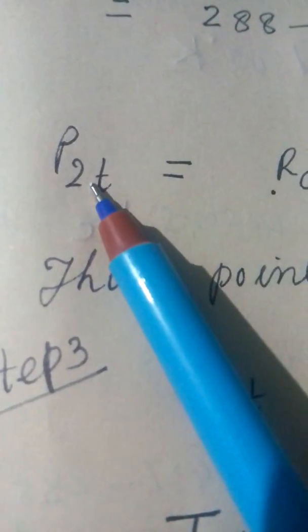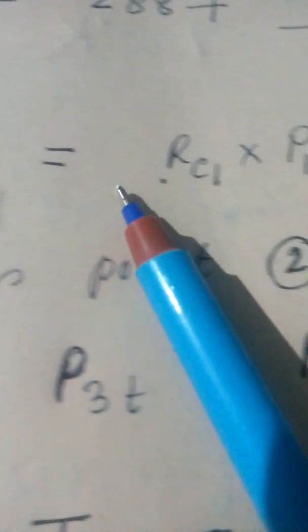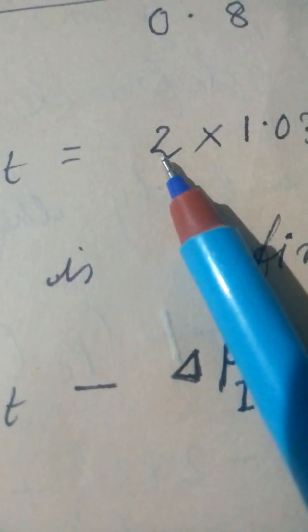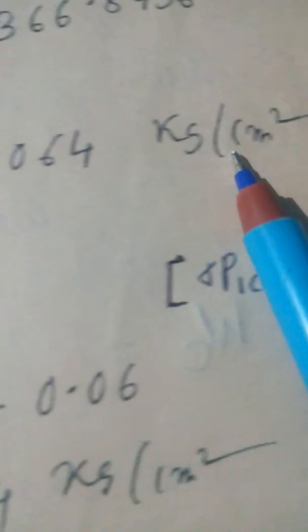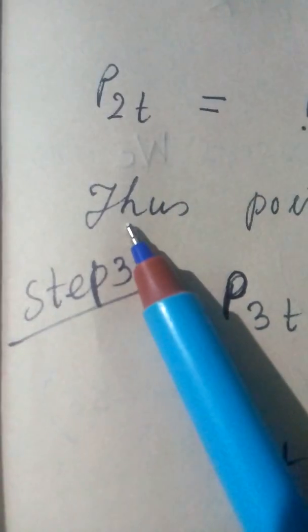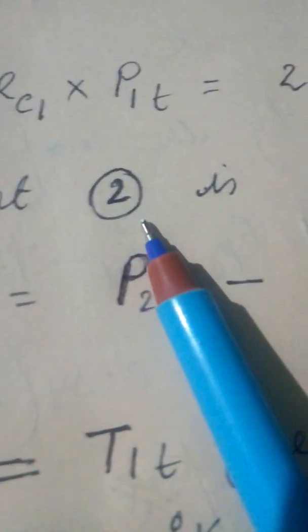Now P2T is equal to RC1 into P1T. So RC1 is given 2, RC1 is equal to RC2 is equal to 2, this is given. Thus point 2 is defined.